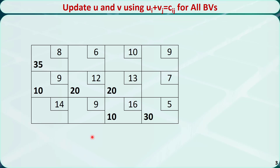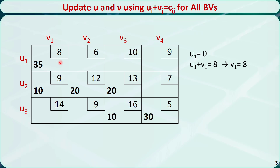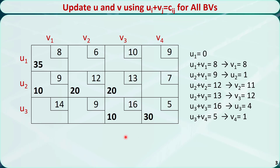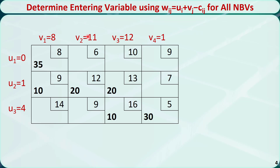In step 3, we introduce 3 u's and 4 v's because we have 3 rows and 4 columns. We start with u1 and use ui + vj = cij to find the values for all the u's and v's. We only do this for each cell with a basic variable. Starting from u1 = 0: for the first basic variable, u1 + v1 = 8, so v1 = 8. For the second basic variable, u2 + v1 = 9 and v1 = 8, so u2 = 1. We continue for all other basic variables to get the final values of all u's and v's.